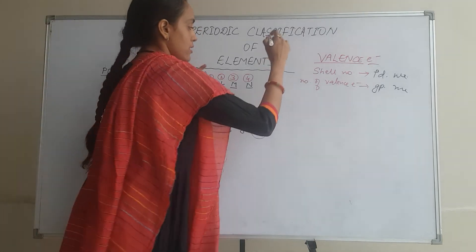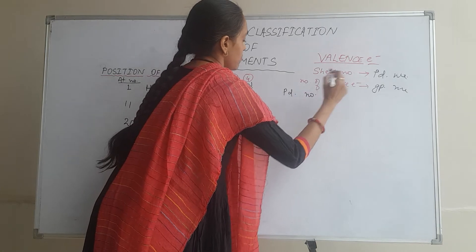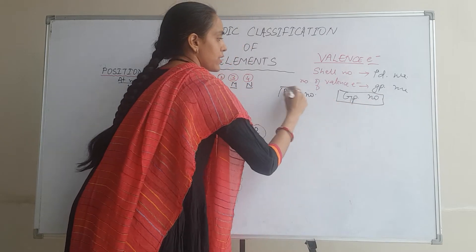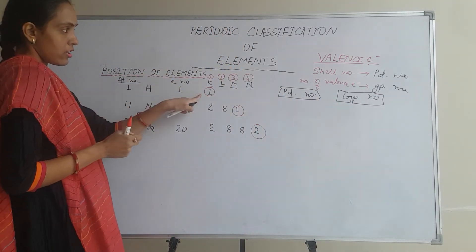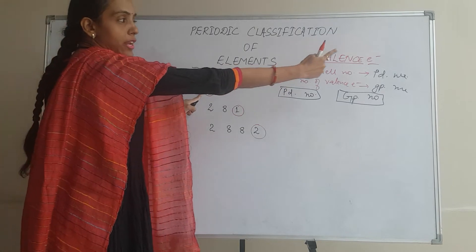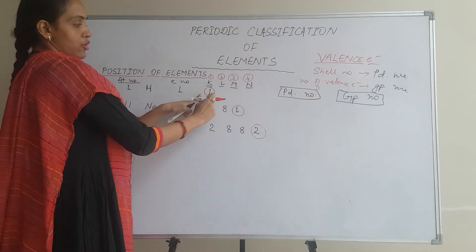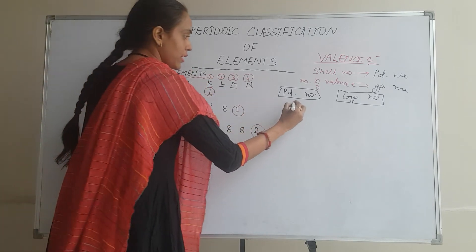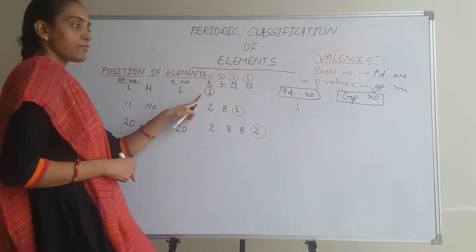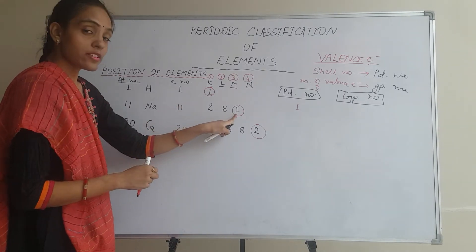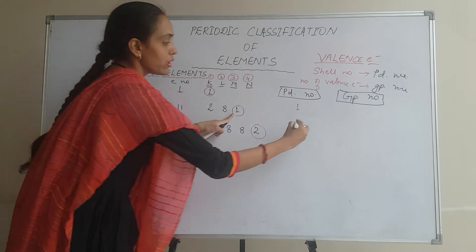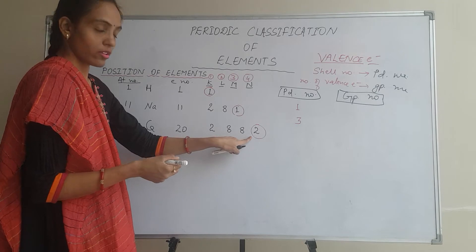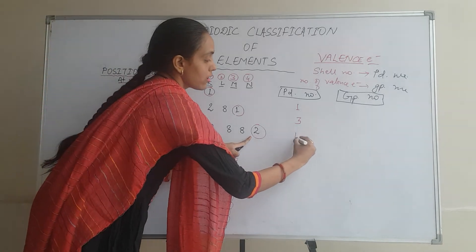Now with this, we want to know the period number and group number. Let us find it out. Shell number tells us the period number. For Hydrogen: the valence electron is in shell 1, so period number is 1. For Sodium: the valence electron is in the third shell, so period number is 3. For Calcium: the valence electron is in the fourth shell, so period number is 4. Isn't it so easy?